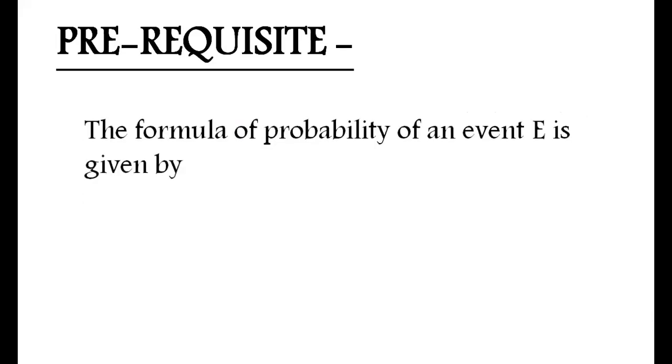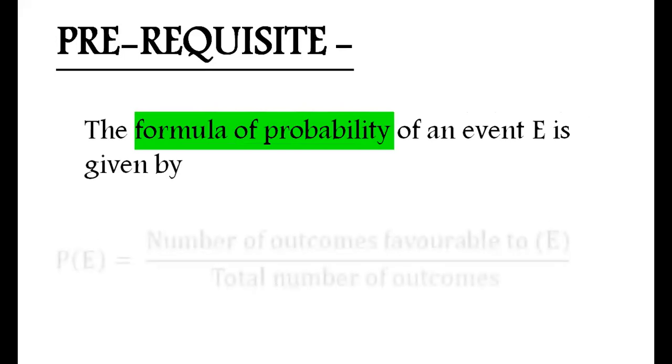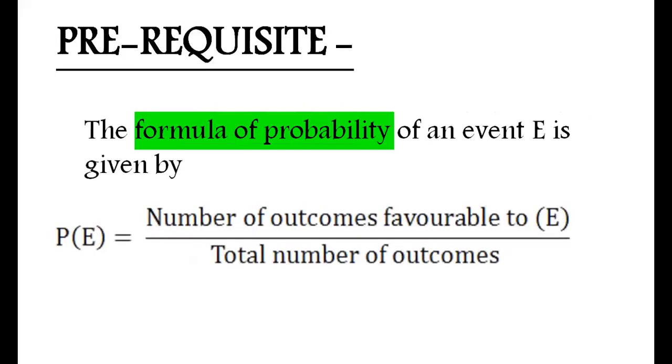The pre-requisite knowledge required for this activity is the formula of probability of an event E, which is equal to the number of outcomes favorable to the event divided by the total number of outcomes. Material required is two dice.